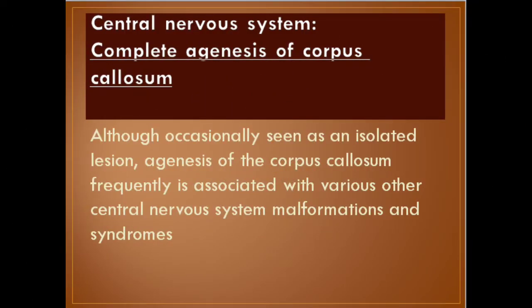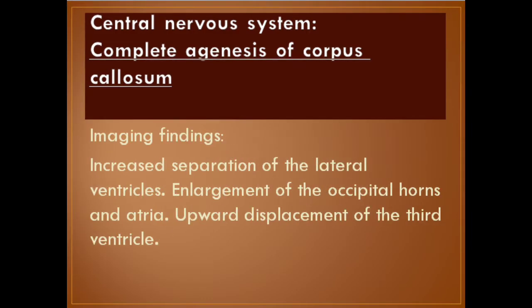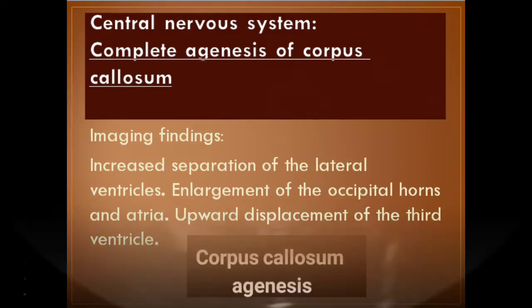Number six: complete agenesis of the corpus callosum. Although occasionally seen as an isolated lesion, agenesis of the corpus callosum is frequently associated with various other central nervous system malformations and syndromes. Imaging findings include increased separation of the lateral ventricles, enlargement of the occipital horns and atria, and upward displacement of the third ventricle.